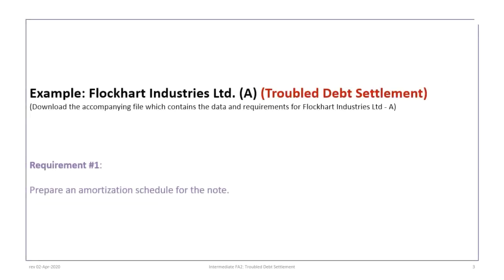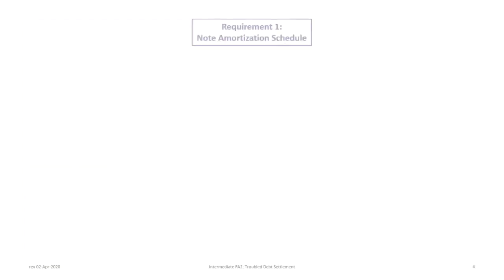This tutorial is based on the Flockhart Industries A example that deals with settlement of troubled debt. Please make sure that you download the correct file and preview the information provided so that we can proceed. Assuming you've done that, we will now look at requirement 1, which is to prepare an amortization schedule for the note between Flockhart and BSL.